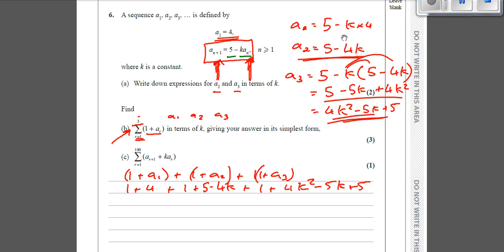So if we have a look at the k squareds first of all, we've just got the 4k squared. If we have a look at the k's, we've got minus 4k, then minus 5k, so that's minus 9k. And probably the hardest part of this is adding up 1 plus 4, plus 1 plus 5, plus 1 plus 5. So 1 plus 4 is 5, plus 1 is 6, plus 5 is 11,